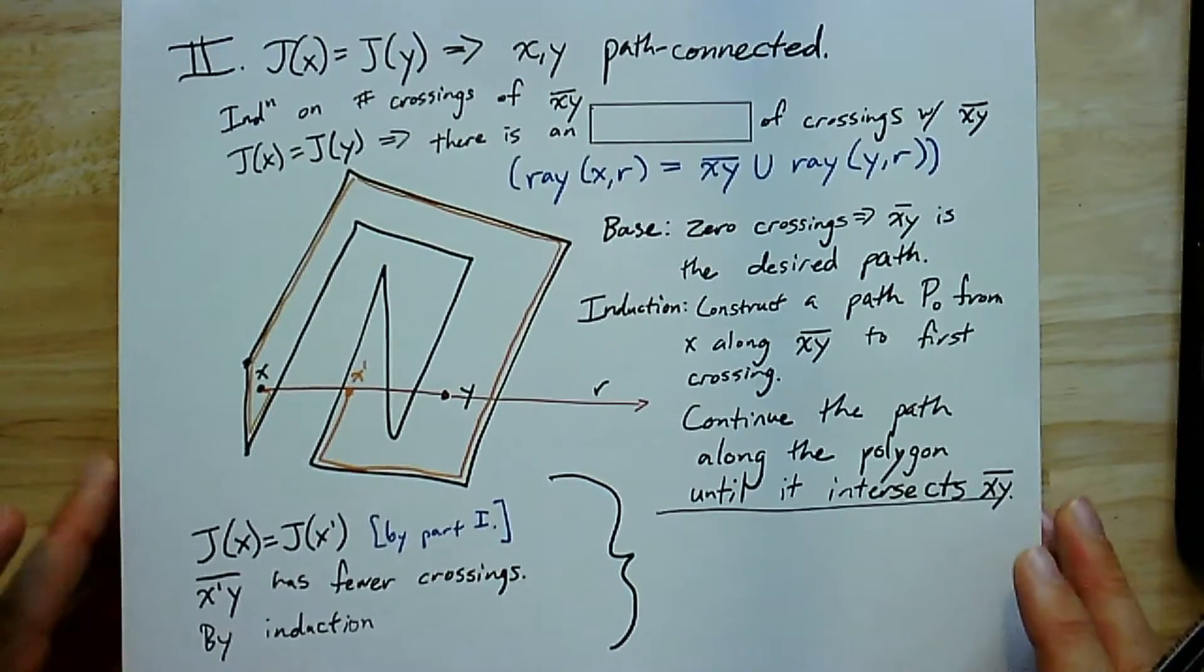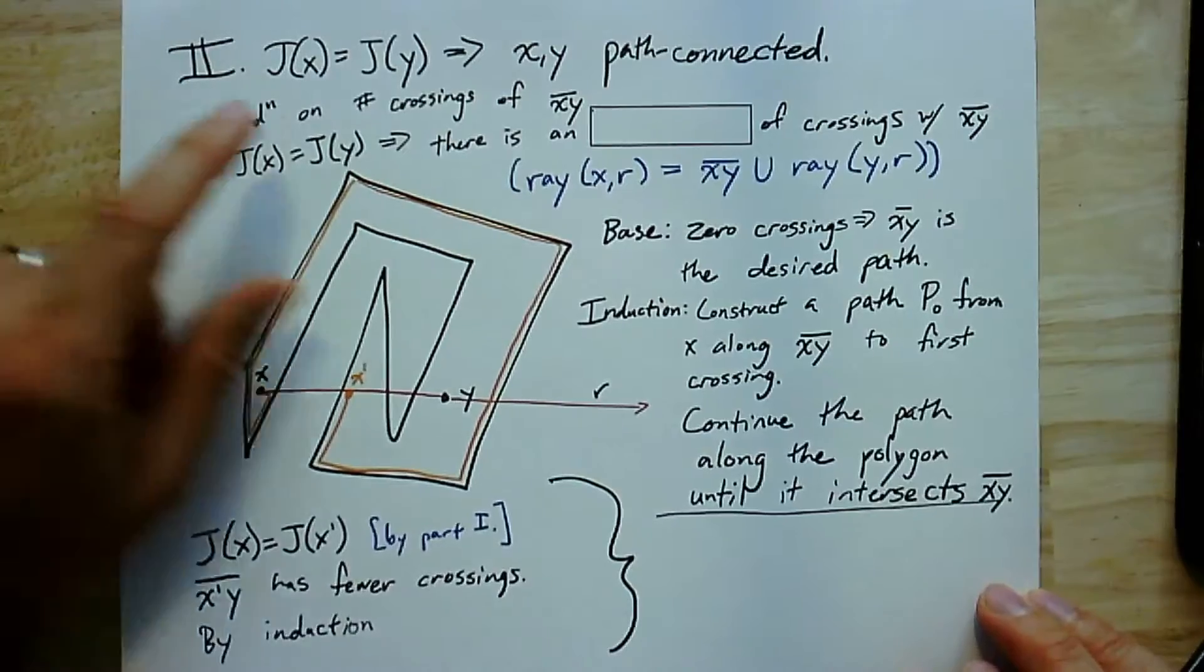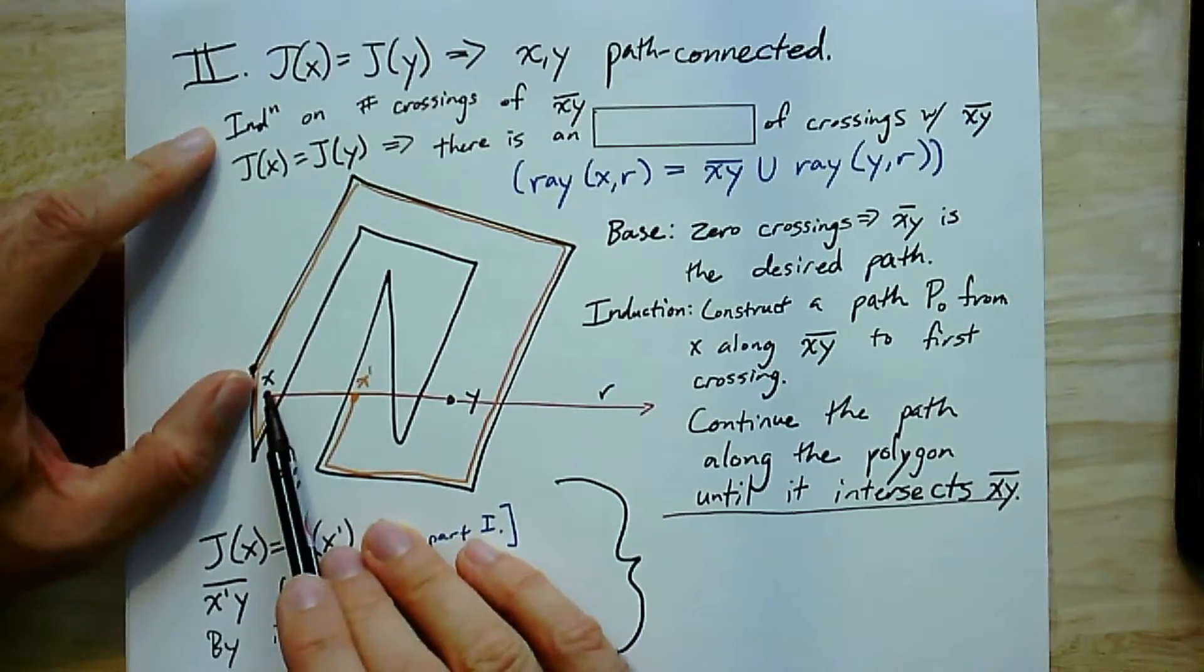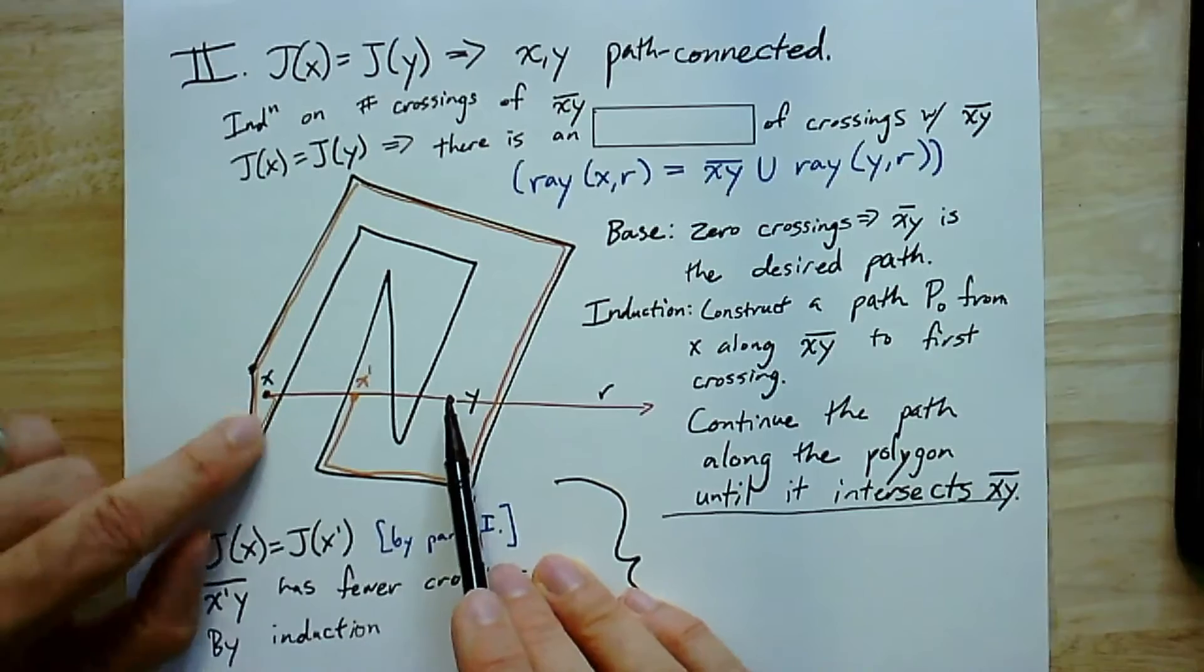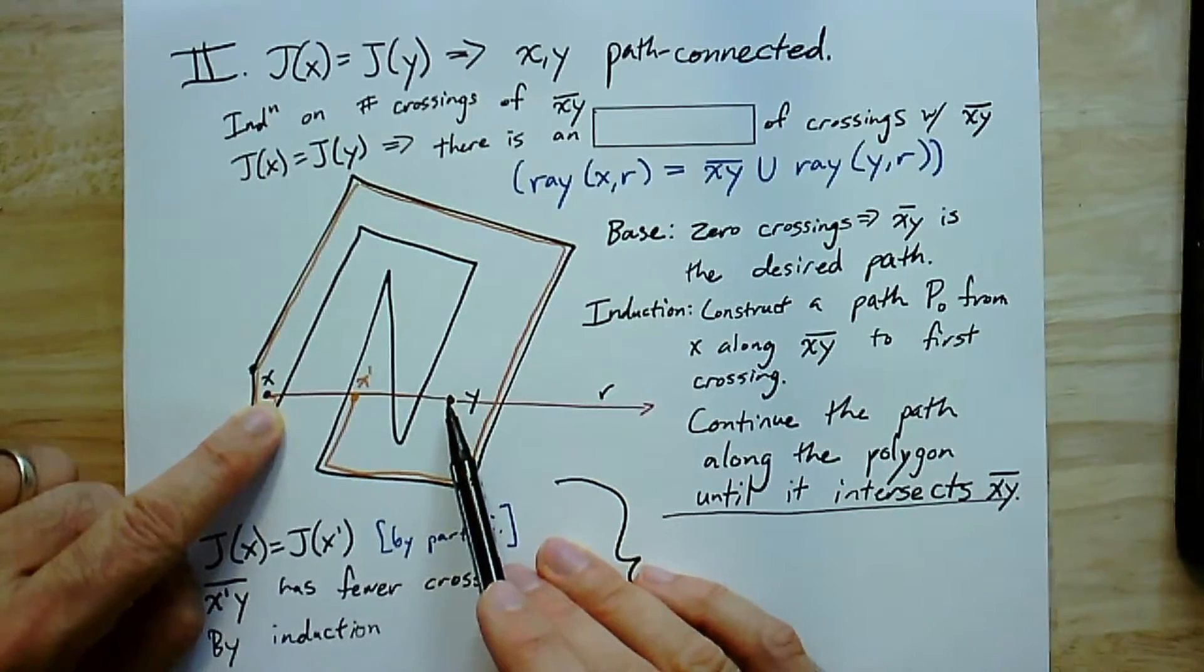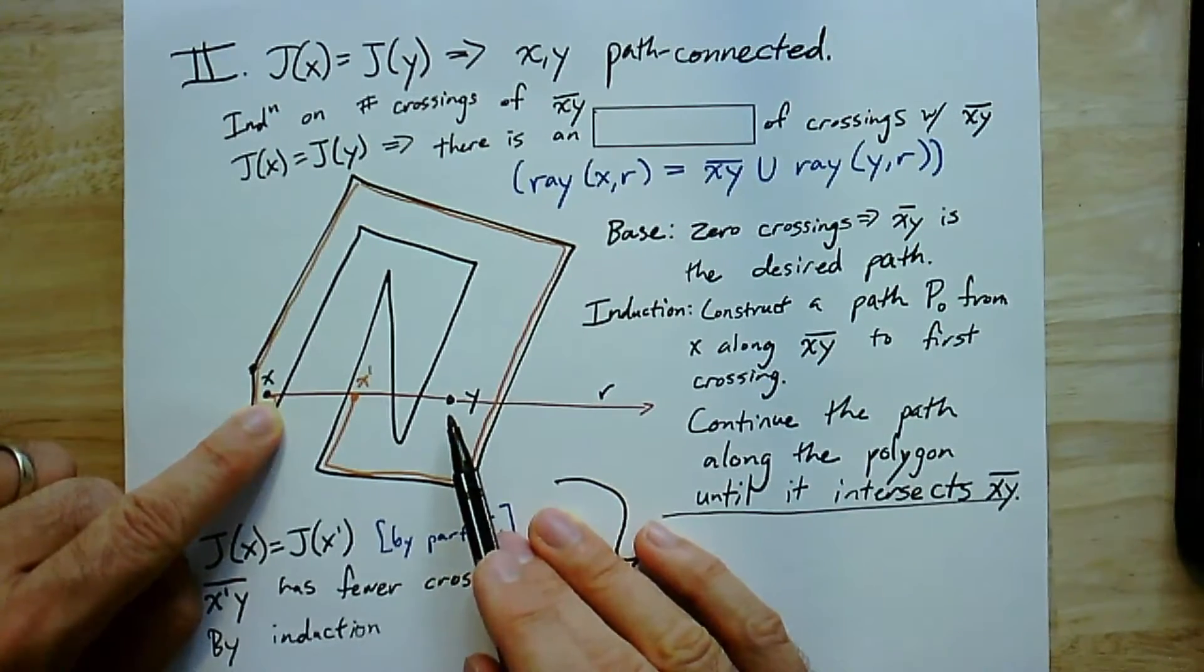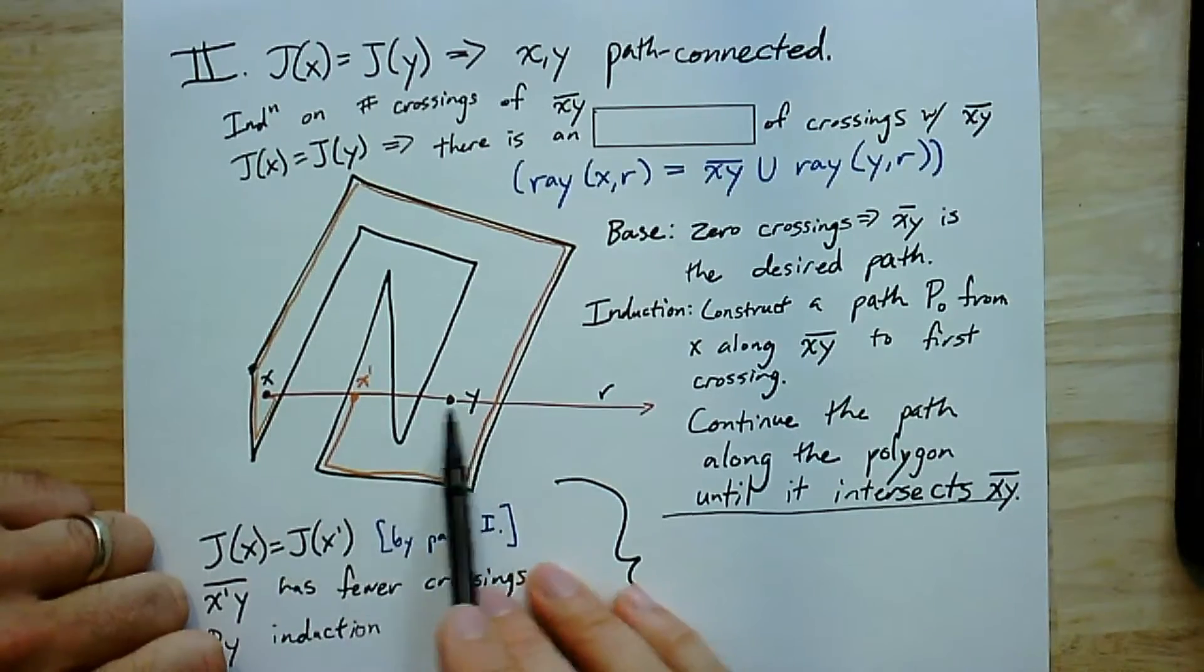I apologize, there's a lot of text all at once here, but here's the idea. We want to get the other direction now. So that is, if we have two points where j(x) is equal to j(y), then they actually are path connected. And here's where we're really going to have to use facts about polygons and the plane. What we'll do is we'll do induction on the number of crossings in this line segment that goes straight from x to y. Now, if there were no crossings between x and y, the base case of zero crossings, then that's the path. That would be the polygonal path. We'd be all done. Everything would be fine. We'd show they're path connected by just taking the path, which was a single line segment.